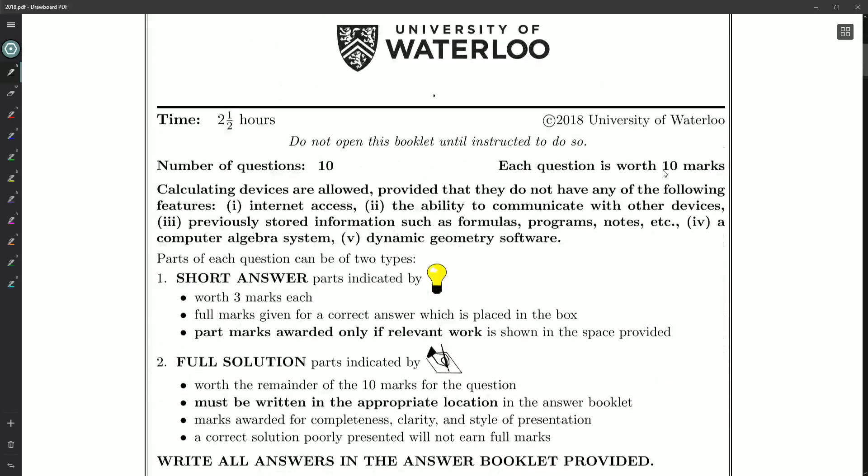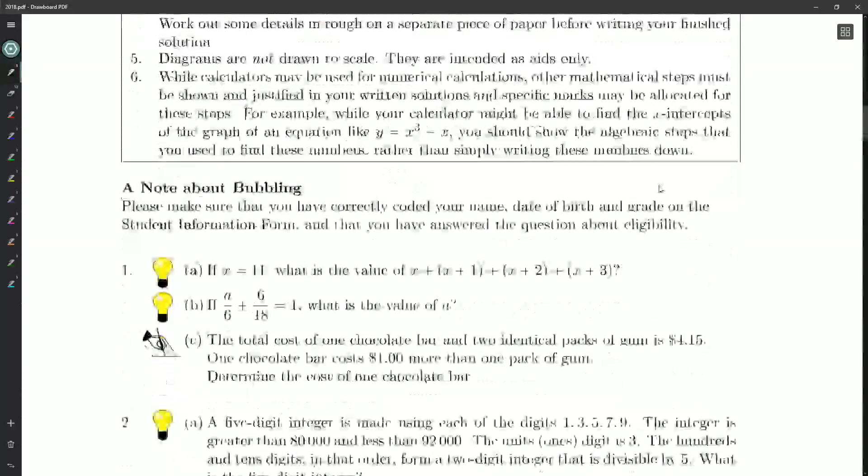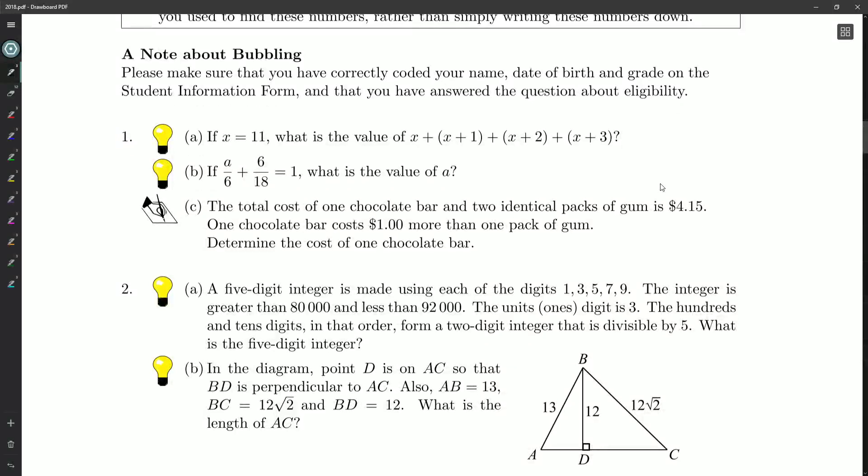A few things to note: if you are going to be writing the Euclid, it's two and a half hours. There are two types of questions. Some indicated by light bulbs just require a final answer you put in a box in the booklet. Then there are questions indicated by a hand writing on paper where you have to write out all the details of your solutions and justify things. There's ten questions, ten marks per question, and I'm just going to go through one question per video. We'll start with question number one.